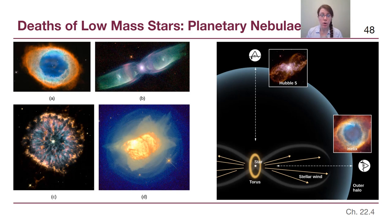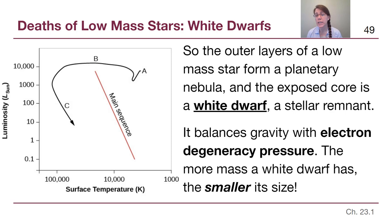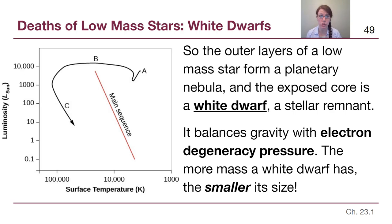The outer layers of a Sun-like star create this planetary nebula, but then they leave behind the exposed core, which is now extremely hot and extremely small because it's been contracting this whole time. When the outer layers leave, the exposed core gets a new name — it's called a white dwarf. A white dwarf is the leftover core of what used to be a somewhat low-mass star.